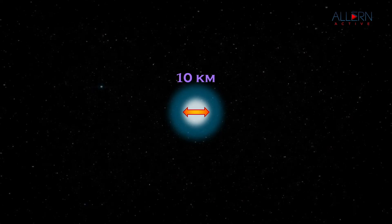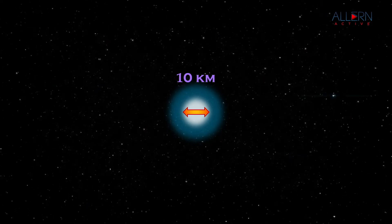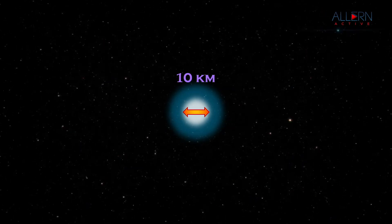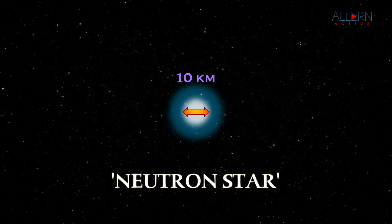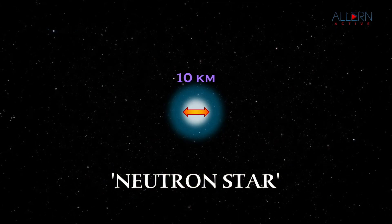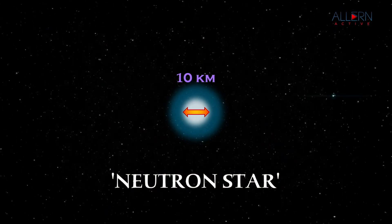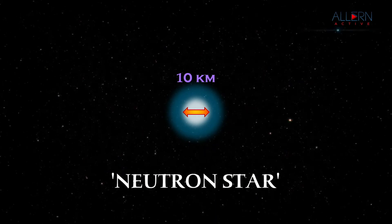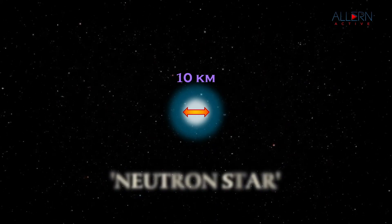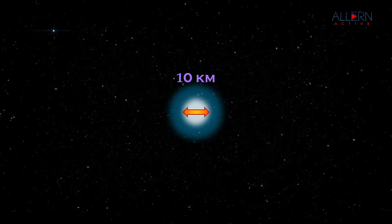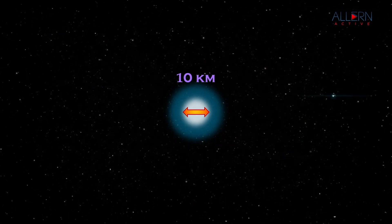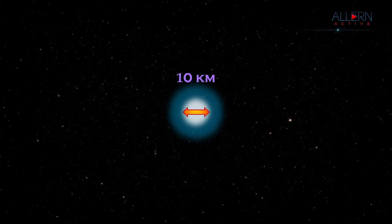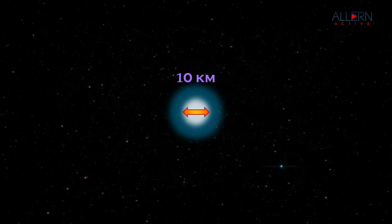In this state the stars are completely made up of neutrons and are called neutron stars. The pressure of these neutrons is independent of temperature and is capable of balancing the gravitational force forever. The neutron star is the end stage of these stars.